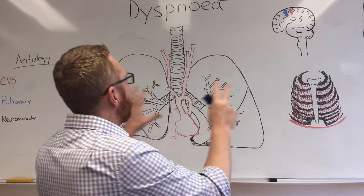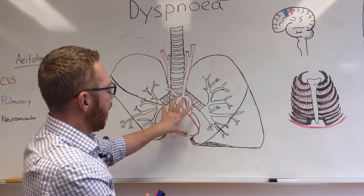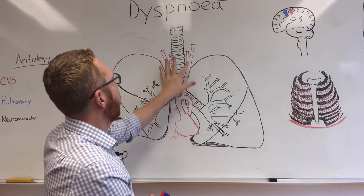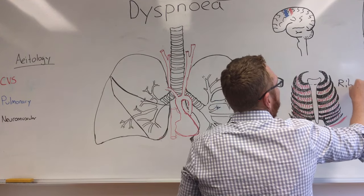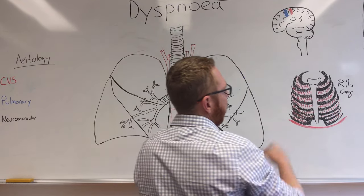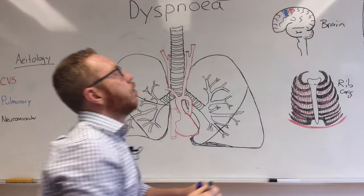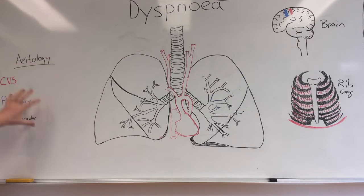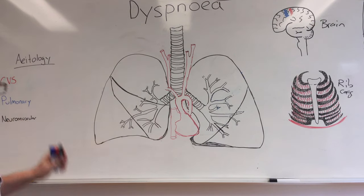Let's first have a look at the board. We've got the lungs in the background with the bronchial tree. In there, we've got the heart. We've got the aortic arch going up to the common carotid arteries. Over here, we've got the rib cage, and you can see in between the ribs the intercostal muscles. Down here we've got the diaphragm, and up here you can see it's the brain. Over here we've got the etiologies, broken into cardiovascular causes, pulmonary causes, and neuromuscular causes. These aren't all of them, but these are the most common diseases that may present with dyspnea.